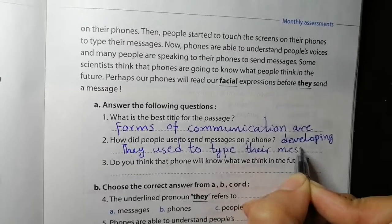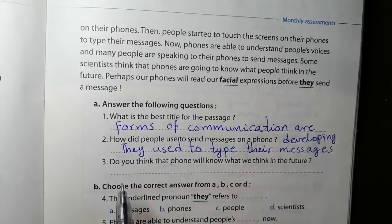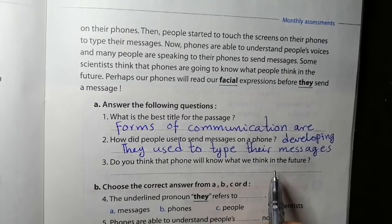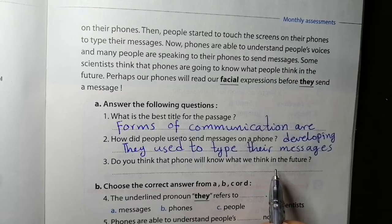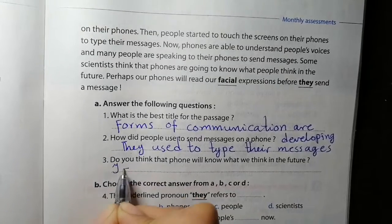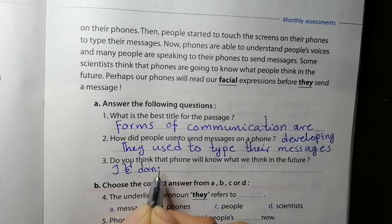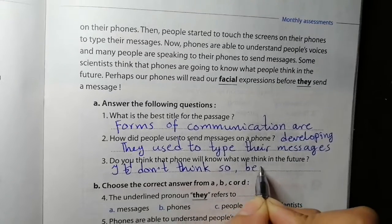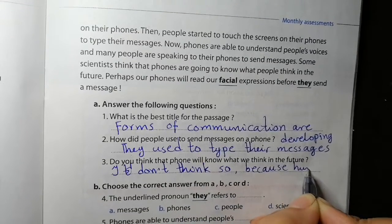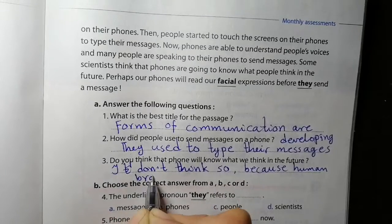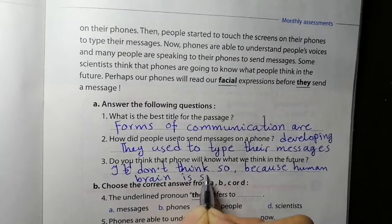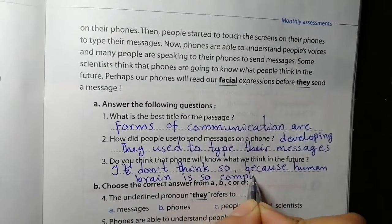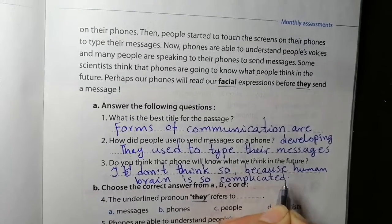Do you think that phones will know what we think in the future? I don't think so, because human brain is so complicated. It's not easy to know what's going on in man's head. Or it could happen, nobody knows.